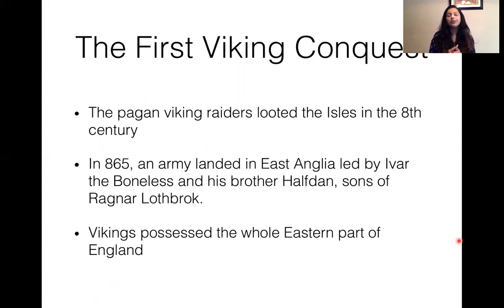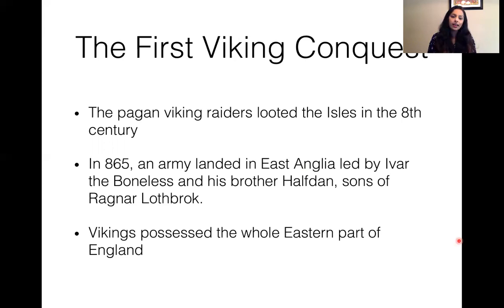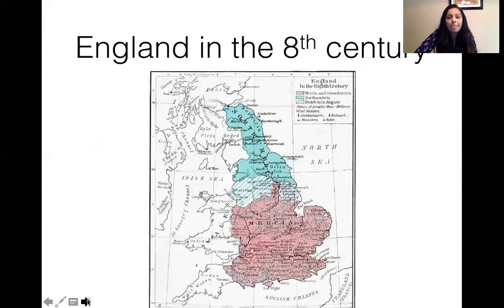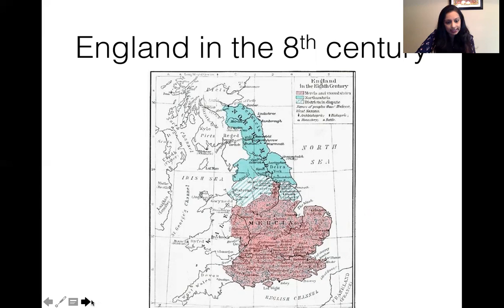From 800 to 1100, in the eighth century, the first Viking conquest happened. The first Viking raiders landed in East Anglia in 865, led by Ivar the Boneless and his brother Halfdan — both sons of Ragnar Lothbrok. They possessed the whole eastern part of England and set up a kingdom there. Here is a map of England in the eighth century showing where East Anglia is.